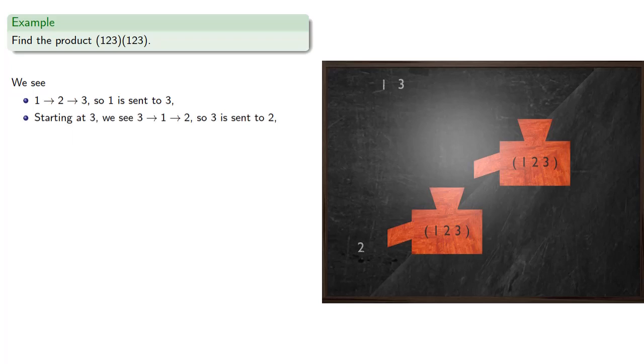And so 3 is sent to 2. And finally, we'll see where 2 goes. So starting at 2, we see that 2 gets sent to 3, and then 3 gets sent to 1. So 2 is sent to 1, which is where we started, so our cycle is (1,3,2).